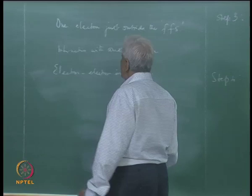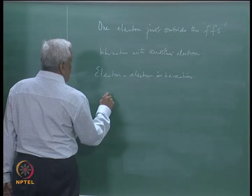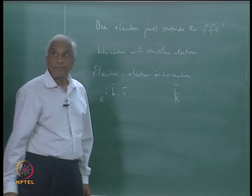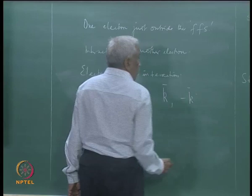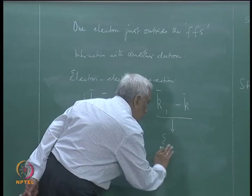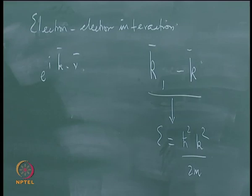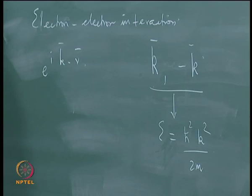This interaction depends on the electron states, and we know that these are plane wave states of the form e^(ik·r), where k is the wave vector. So we have one electron with wave vector k and another electron with wave vector −k, both corresponding to the same energy because energy is ℏ²k²/2m. Since energy depends on the square of the wave vector, both k and −k correspond to the same energy eigenvalue for the given pair of electrons.